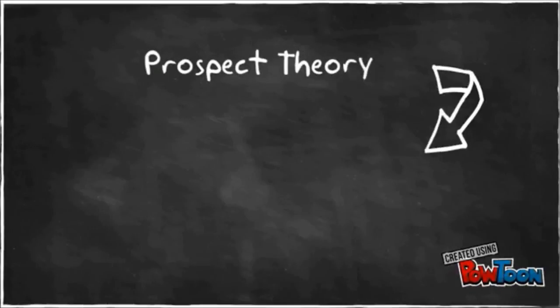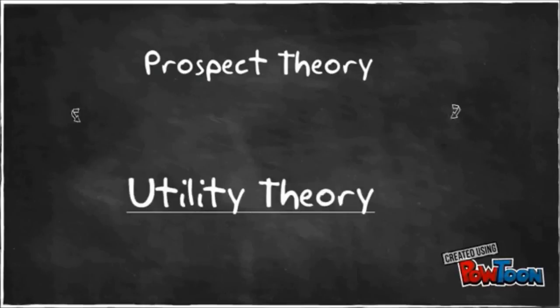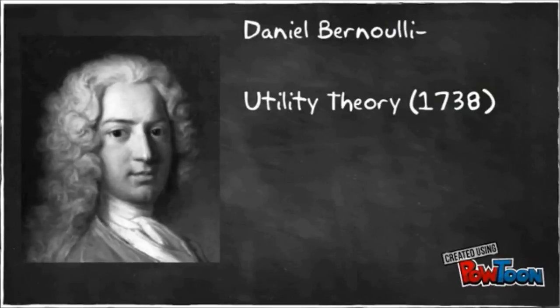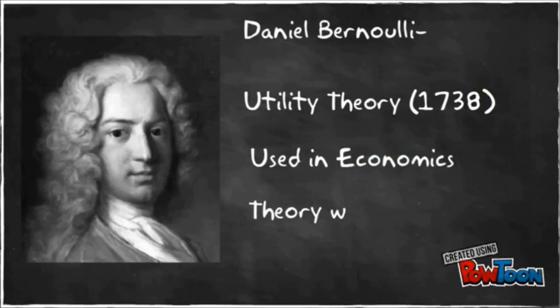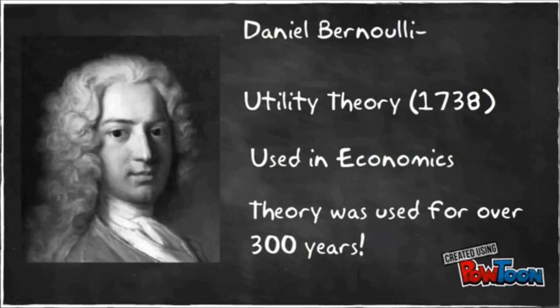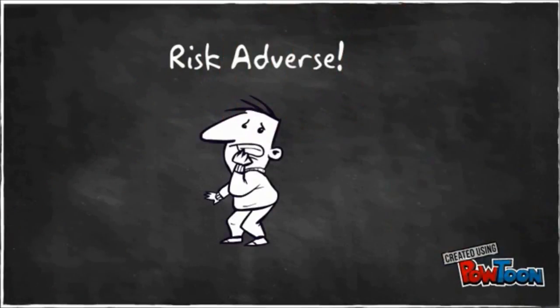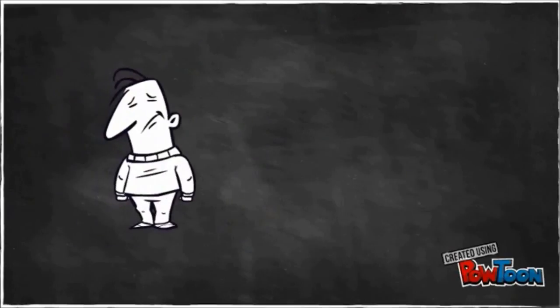Before we talk about Prospect Theory, we have to first discuss its predecessor, Utility Theory. Utility Theory was proposed in 1738 by the Swiss mathematician Daniel Bernoulli. It was known as Moral Expectation, as opposed to the Theory of Mathematical Expectation, until the mid-20th century. Utility Theory explains why most people are risk-averse when it comes to making decisions that could result in a loss, especially in situations such as gambling.